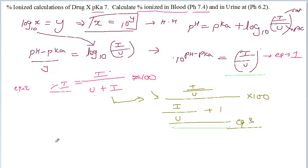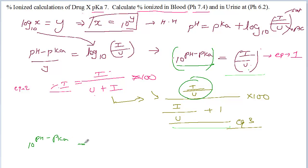As you can notice, ionized over unionized concentration is nothing but 10 to the power of (pH minus pKa). So we simply replace ionized over unionized with 10 to the power of (pH minus pKa). Let's solve this for blood first: 10 to the power of (7.4 minus 7) equals 10 to the power of 0.4, which equals 2.51.